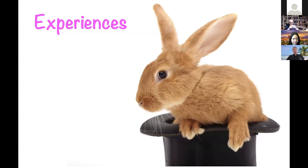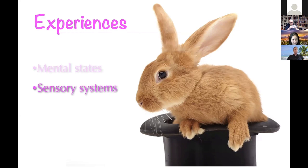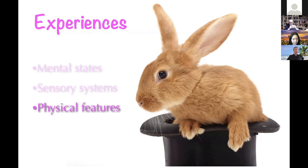Sensory experiences like seeing a rabbit are typically thought of as mental states that are the output of sensory systems of the brain. They present or represent physical features of an external world, such as the shape, color, and position of the rabbit. And they also have a qualitative aspect — a 'what it is like' aspect that we can call phenomenal consciousness.